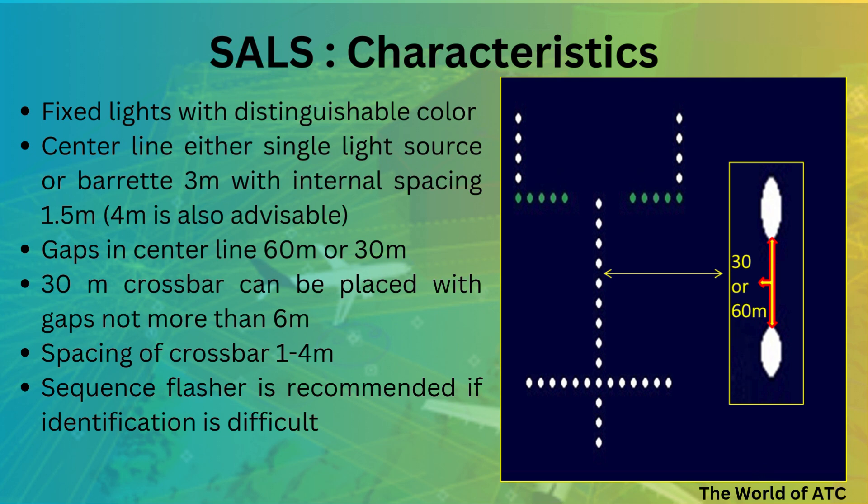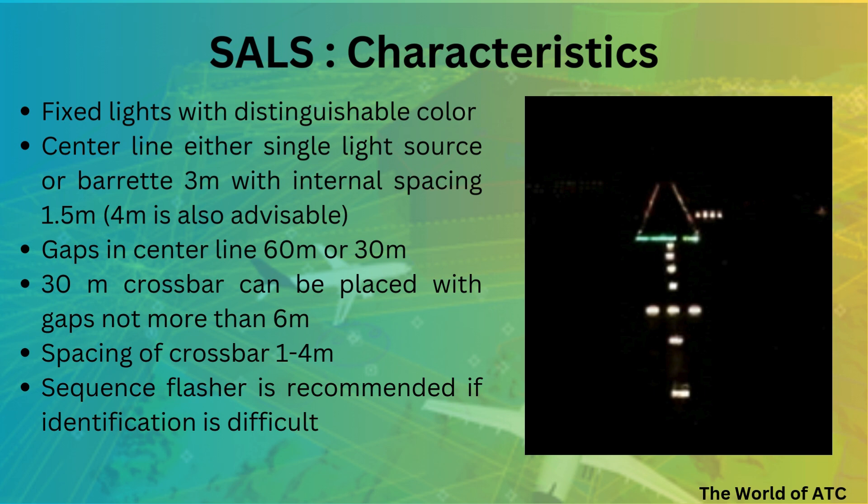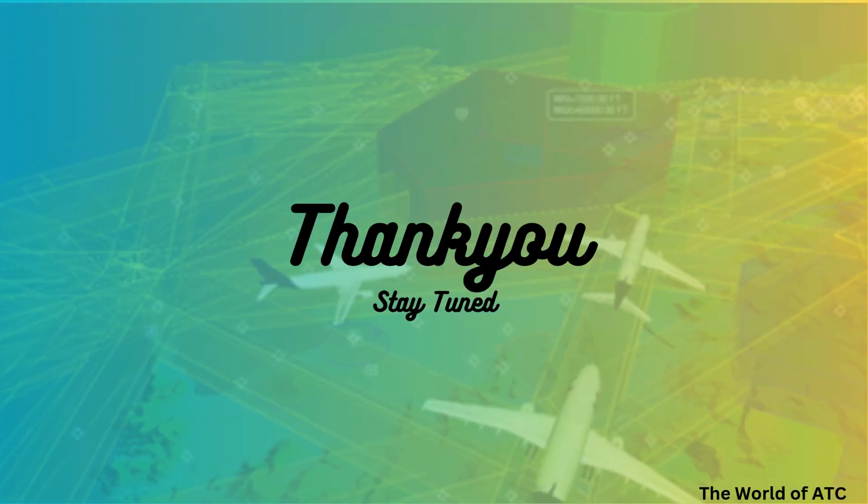The spacing of crossbar lights would be 1 to 4 meters. Moreover, to increase visibility or guidance, a sequence flasher is also recommended in case identification of the runway is difficult.